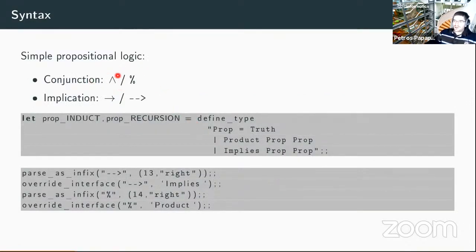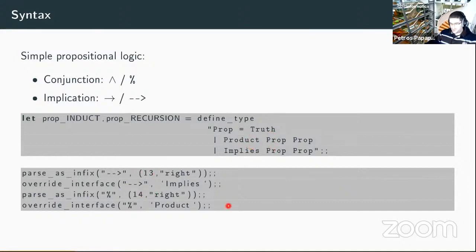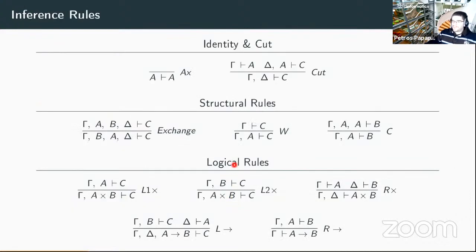We have a very simple logic with just conjunction and implication. I'm giving you the ASCII representation for HOL Light here. Unfortunately HOL Light doesn't have Unicode so we have to use ASCII tricks. We have a simple definition of the propositions with two connectives and some syntax rules. The inference rules you would find in any textbook for propositional logic — but the thing to notice is they are not the usual natural deduction rules. Instead we're using sequent calculus, because it's much easier to deal with at a structural level and to mechanize the proofs.